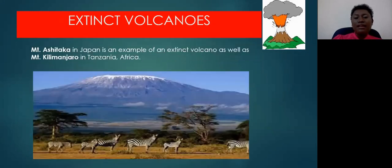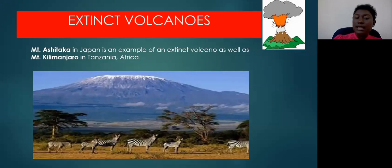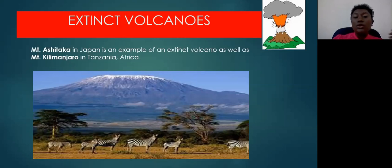Here you see a picture of Mount Kilimanjaro, which is in Tanzania in Africa — an example of an extinct volcano. Mount Ashitaka in Japan is also an example of an extinct volcano. Remember, extinct volcanoes were once active thousands or even millions of years ago, but their supply of magma has been cut off, so they do not have the potential to erupt again.